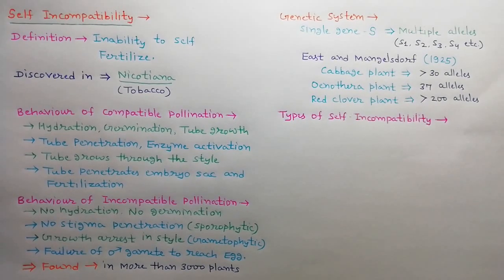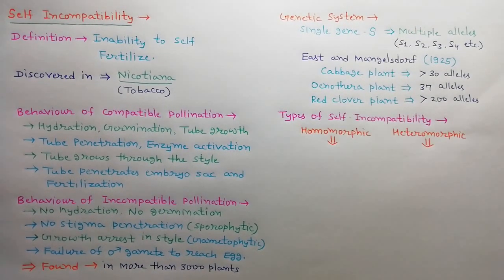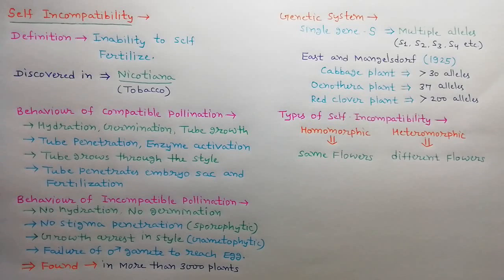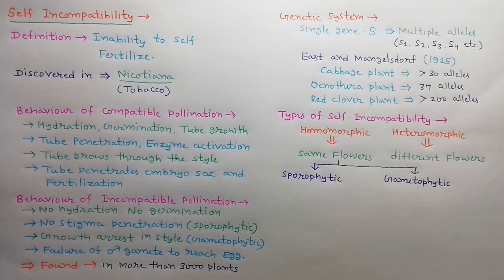Now we discuss the types of self incompatibility. Based upon floral morphology, it is divided into two categories: homomorphic and heteromorphic. In homomorphic, all the flowers are the same in morphology, while in heteromorphic, flowers show variations in morphology. Homomorphic is further divided into two types: sporophytic and gametophytic.